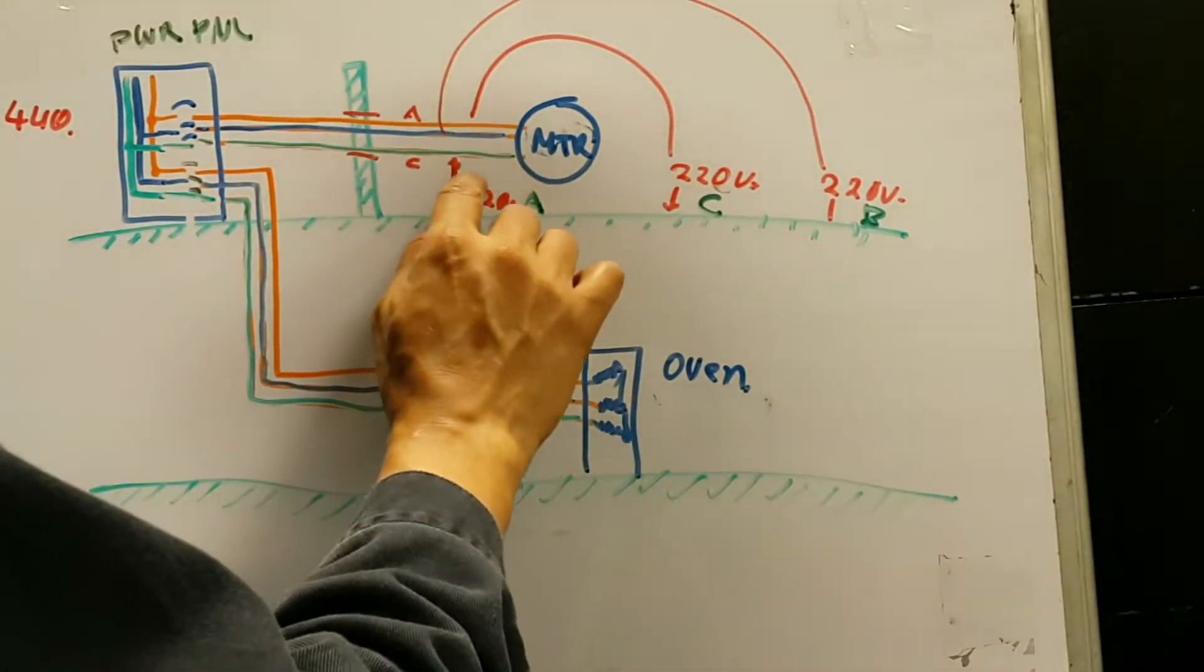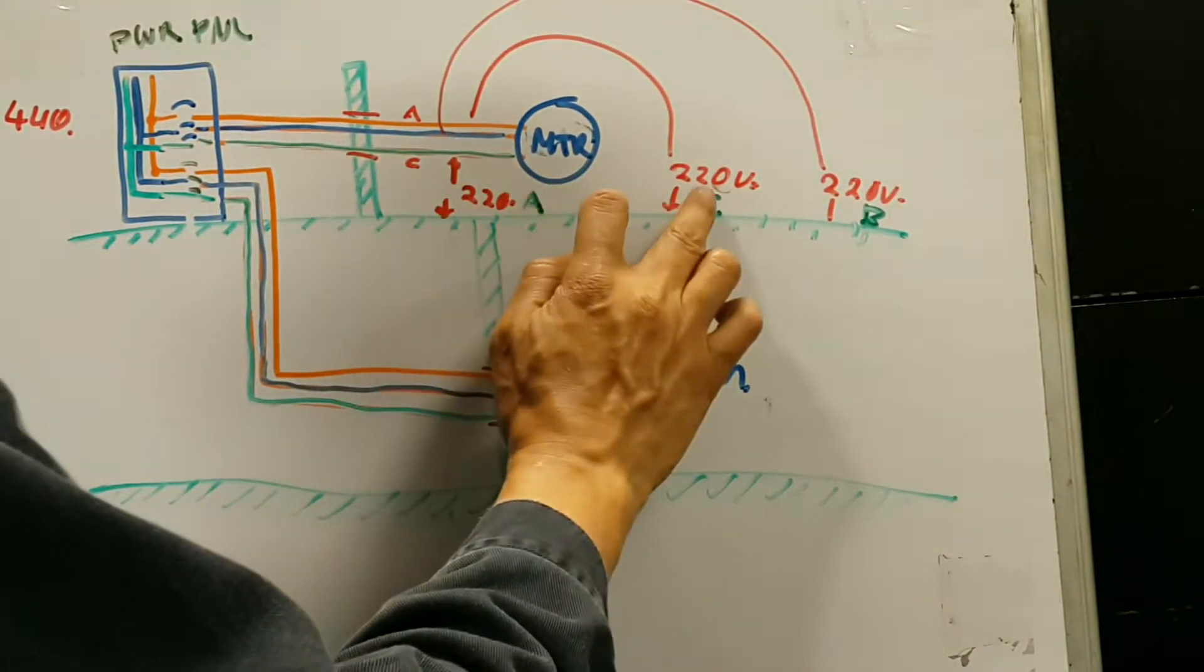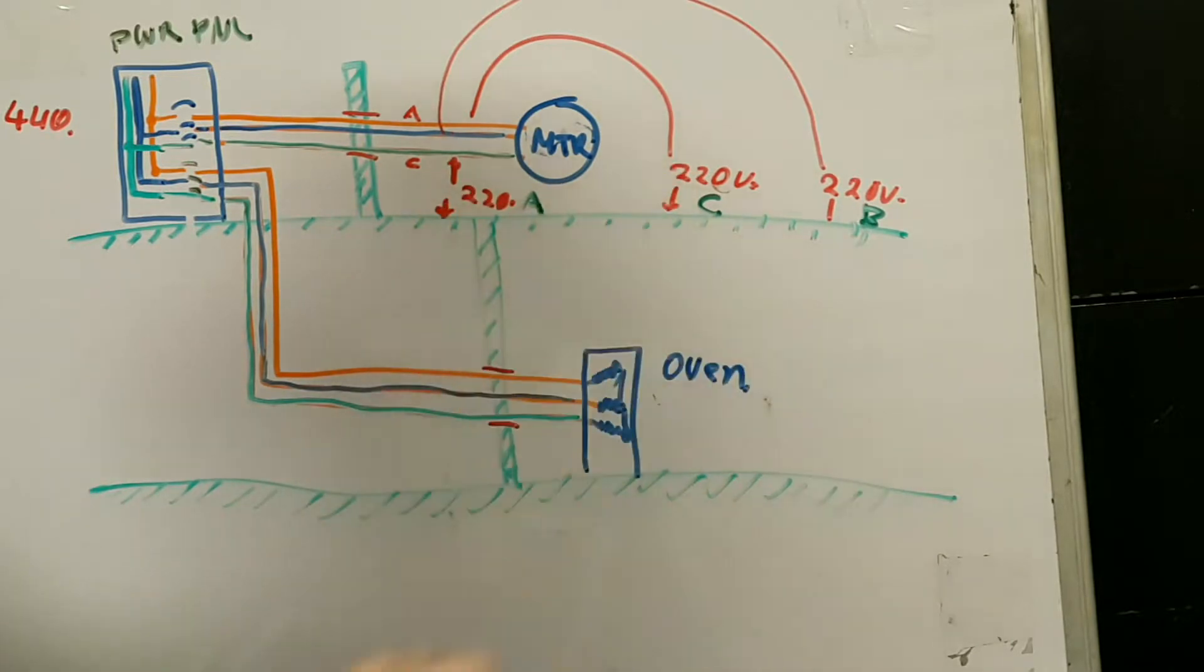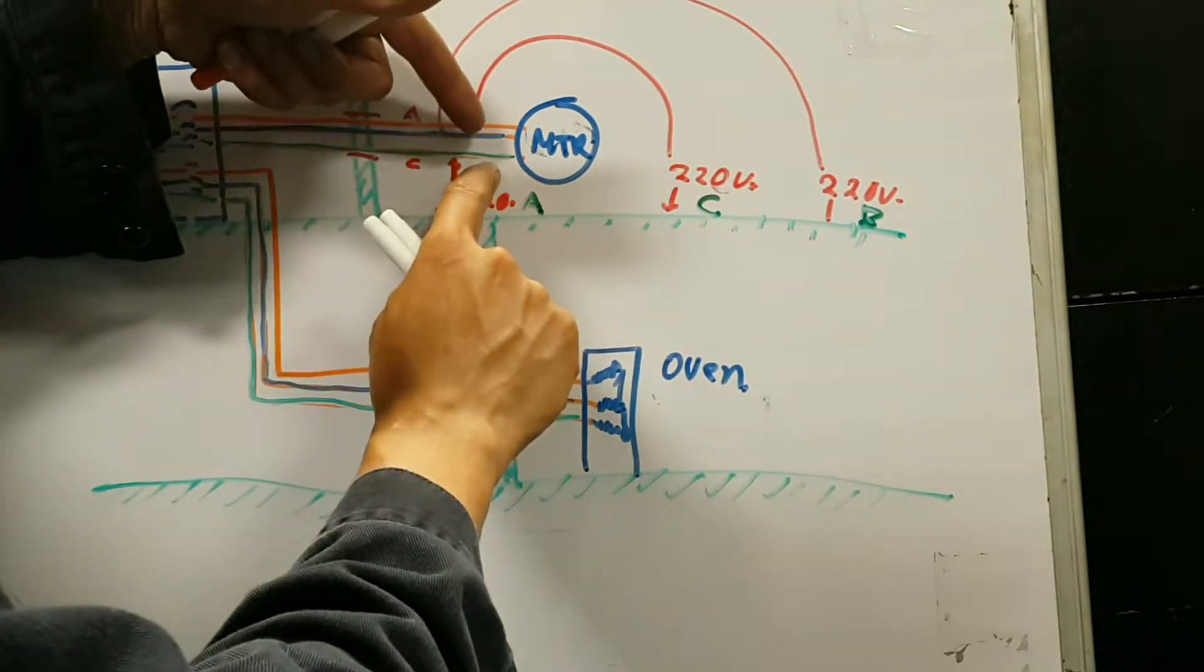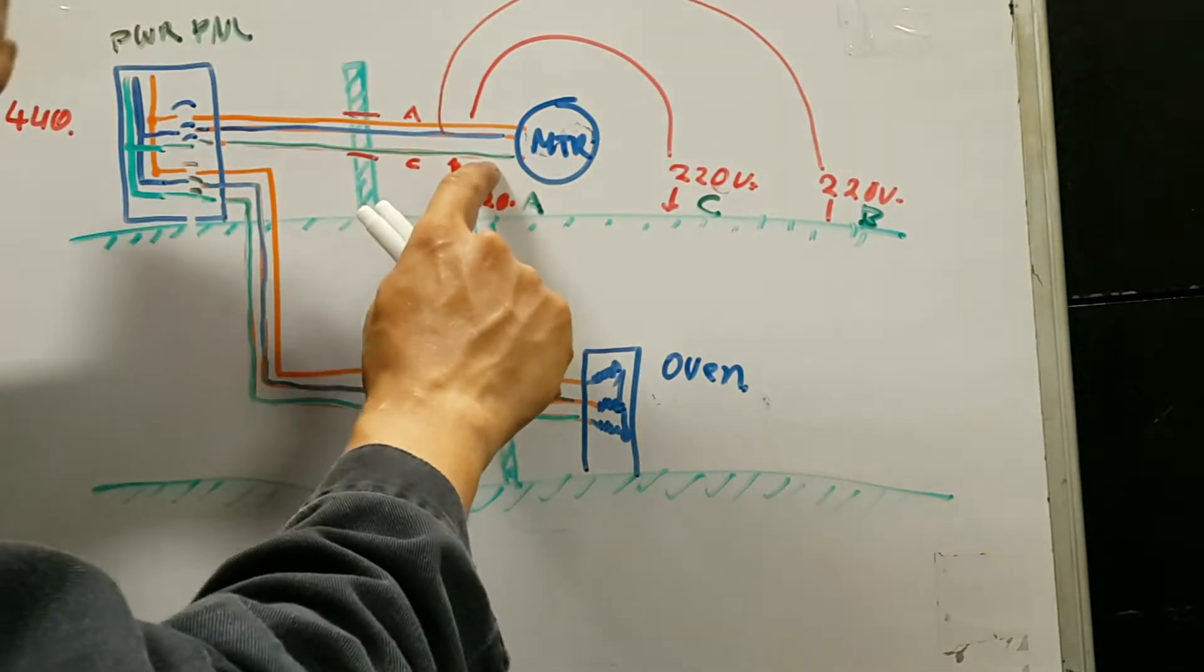If I compare phase alpha to phase Charlie, I will get 440 volts, because that's the difference in voltages between those. So between this phase and the middle phase, which is Bravo, it's 440.